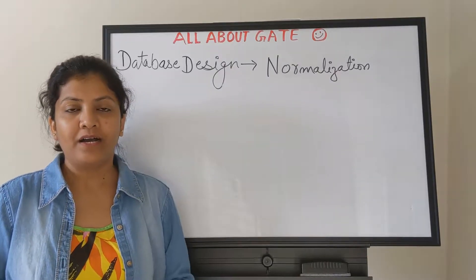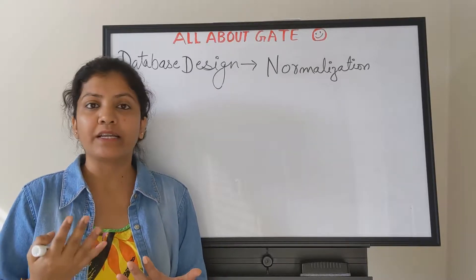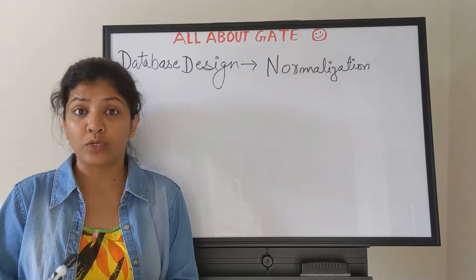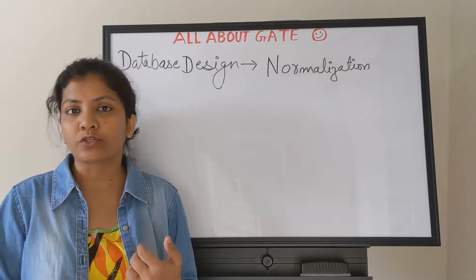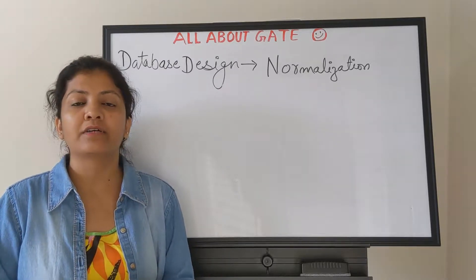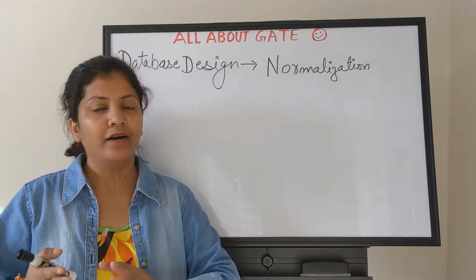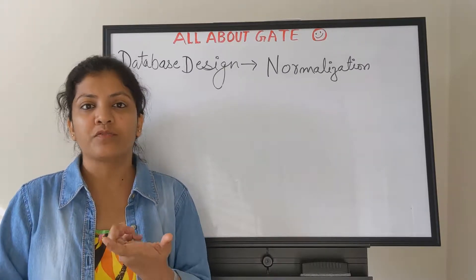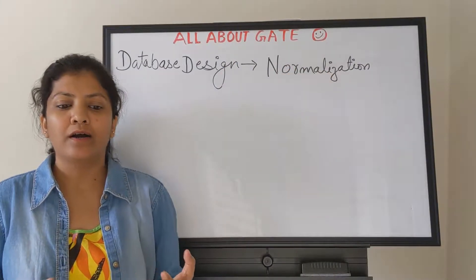We are starting our first unit from database design. In the previous video, you would have understood the concept of relation — what is a relation in terms of DBMS, why a table is known as a relation, what is the basic concept behind it, what is the structure of a relation, and what are the attributes and properties of relation. That concept will be taken forward here because we will be addressing everything in terms of relation and its attributes. So let's understand normalization.